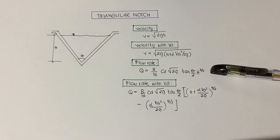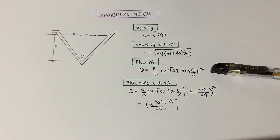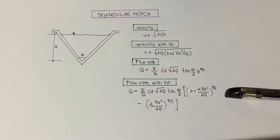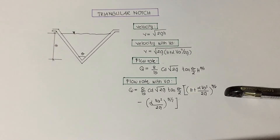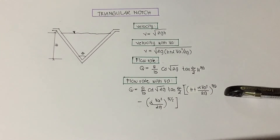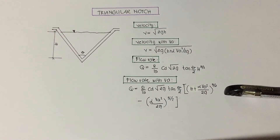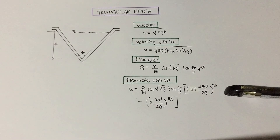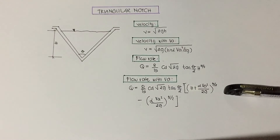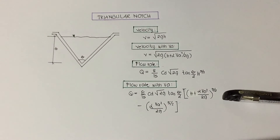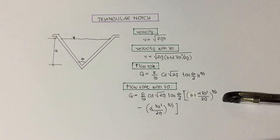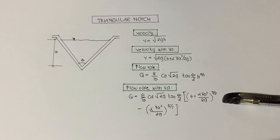The formula for flow rate with velocity approach is equal to 8 over 15 times the coefficient of discharge times the square root of 2g times tangent theta over 2, times the quantity of h plus the Coriolis coefficient times va squared over 2g to the power of five-halves, minus the quantity of the Coriolis coefficient times va squared over 2g to the power of five-halves.